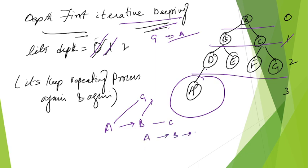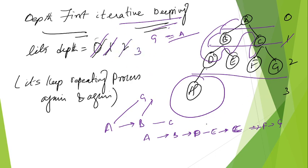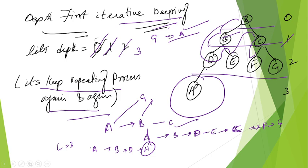Continuing at depth 2: A, B, D, then E, then C, then F, then G — not found yet. Increase to depth 3: A goes to B, B goes to D, D goes to H — solution found! Each time it repeats all previous steps. This repetition of the entire search at each depth level is the drawback of the Iterative Deepening algorithm.